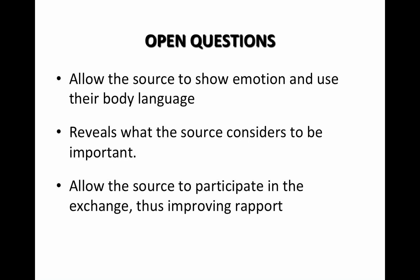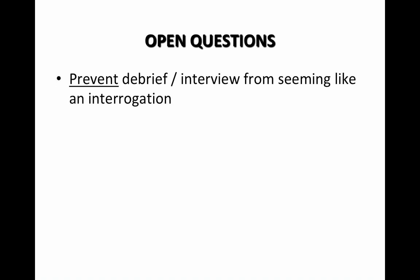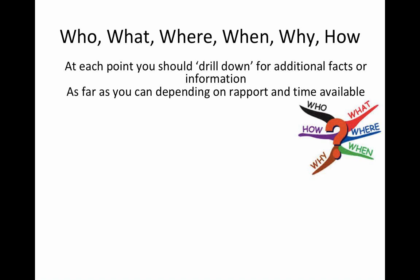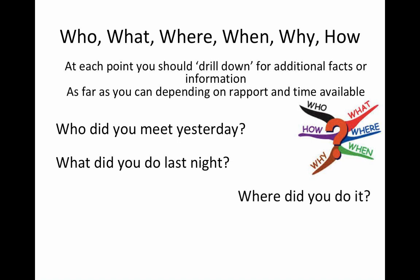Open questions allow the source to participate and improve rapport, which is a critical factor. Make sure your questioning technique doesn't seem like an interrogation. You've got to maintain and build rapport at the same time as getting information — because if they don't like you or your techniques, they'll walk away. So for questions using who, what, where, when, why, how — at each point make a note and then come back to drill down. Who was there, who did you see, who did you hear, what are their names, what were they wearing, what vehicles were they using — and so on, but only once you've finished that section of the conversation.